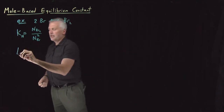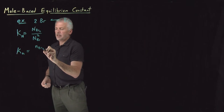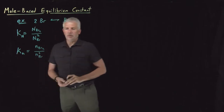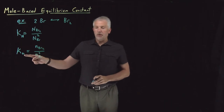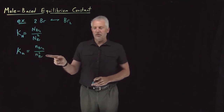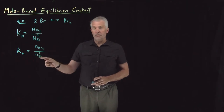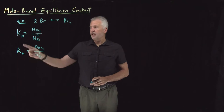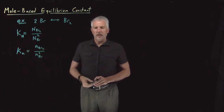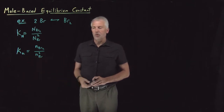It would be nice if we could instead think about an equilibrium constant using moles instead of molecules. So perhaps there's some equilibrium constant that is the ratio of moles of Br2 over moles of Br, denominated in terms of moles rather than molecules. To keep these two distinct, I'm going to call that one K sub little n, the equilibrium constant denominated in terms of moles.